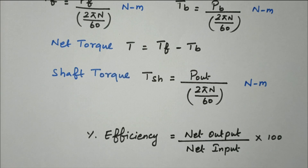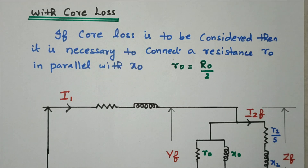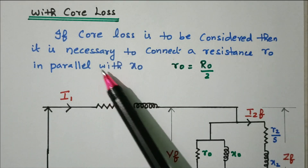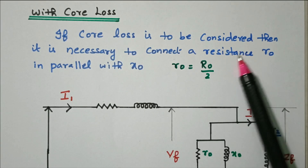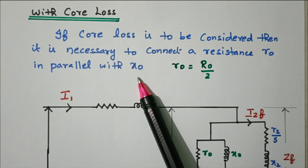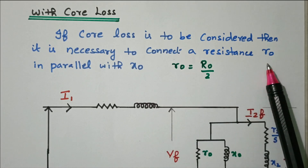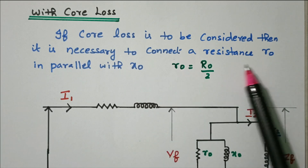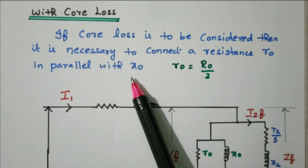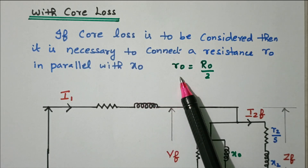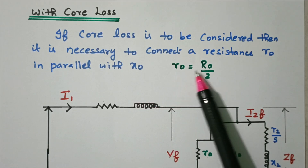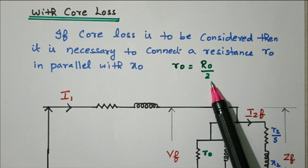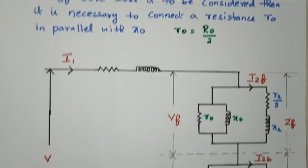Now we'll see the equivalent circuit with core loss. When core loss is to be considered, it is necessary to connect a resistance r0 in parallel with x0. In the previous case we only had x0; now we add r0 in parallel with x0, where small r0 equals R0 divided by 2.